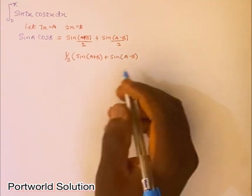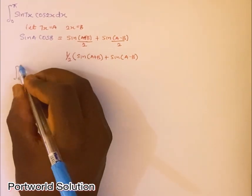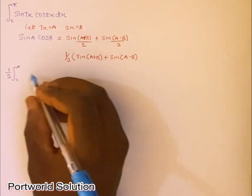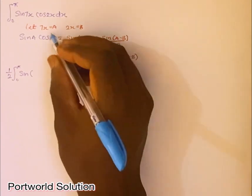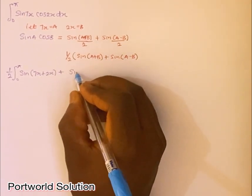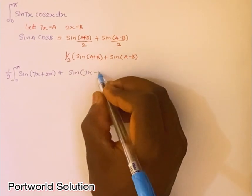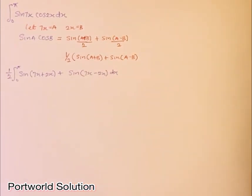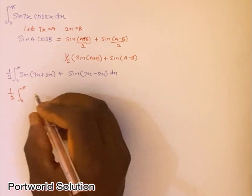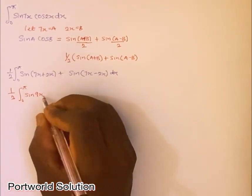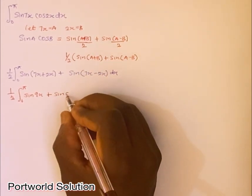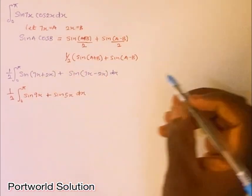Now I'll use this identity. My integral becomes the integral from 0 to π of one-half times [sin(7x+2x) + sin(7x−2x)]dx. Simplifying: 7+2 gives sin(9x), and 7−2 gives sin(5x). So I have one-half times the integral from 0 to π of [sin(9x) + sin(5x)]dx.